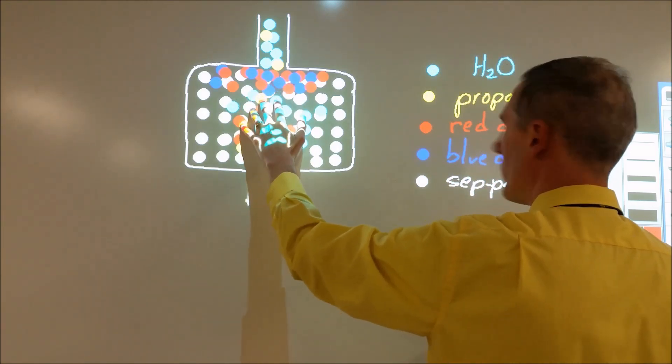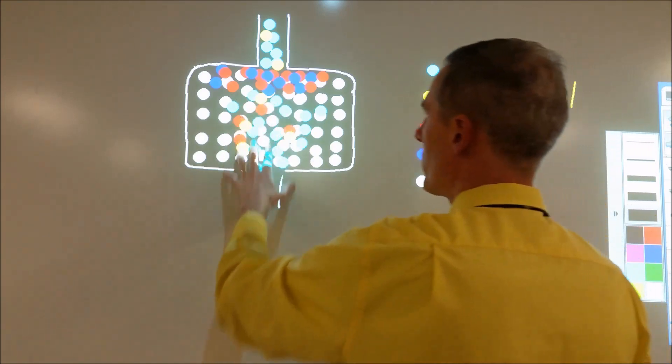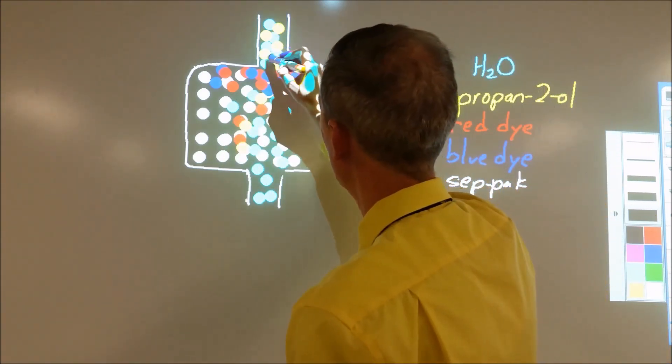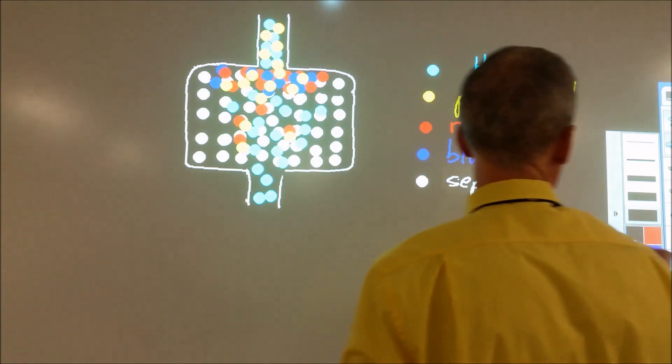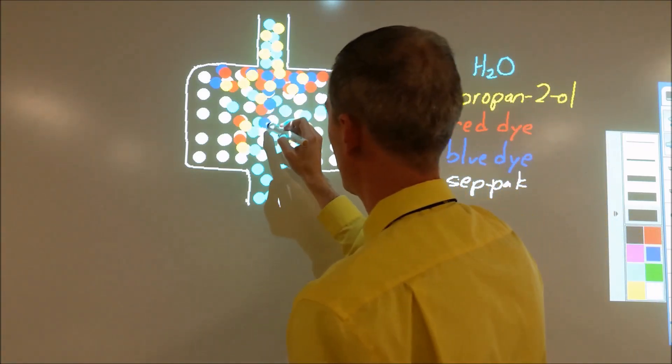Now the blue moves a little bit, but really it's not until we move most of the red out and then we ramp up the concentration and flood this thing with isopropanol that we start to see the blue moving through as well.